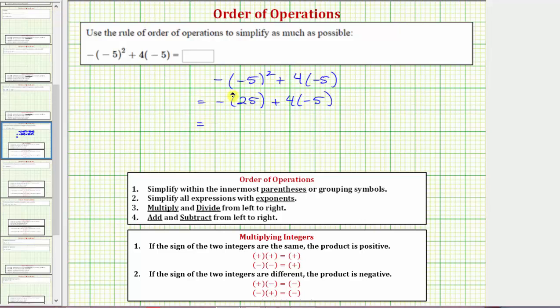So let's go ahead and write this first term as negative twenty-five, and then we have plus, again, four times negative five is equal to negative twenty. Now sometimes you may also see this written as negative twenty-five and then just minus twenty. Remember, adding a negative is the same as subtracting a positive.